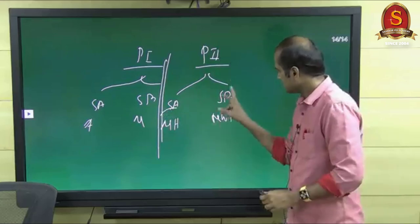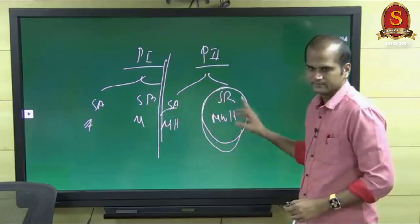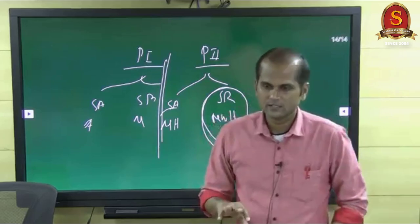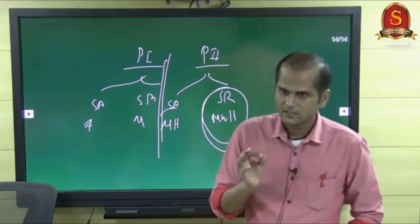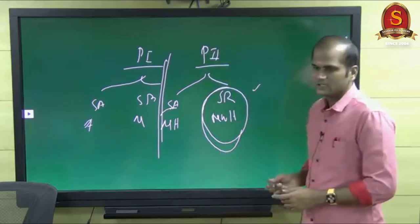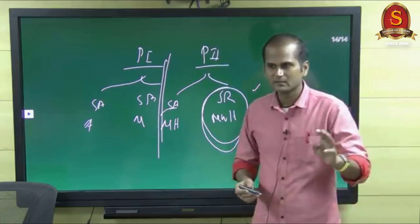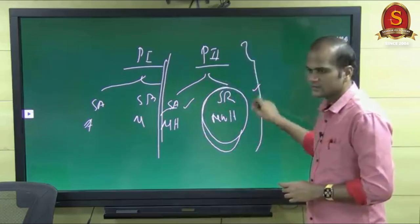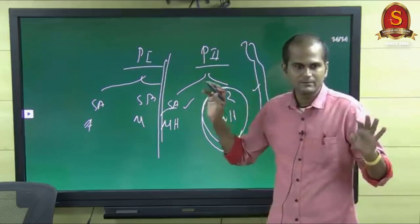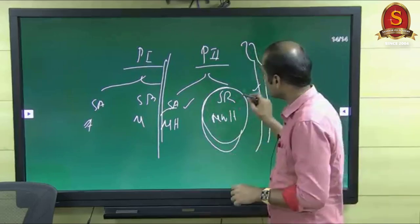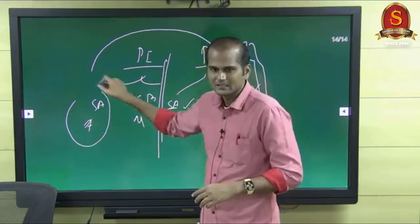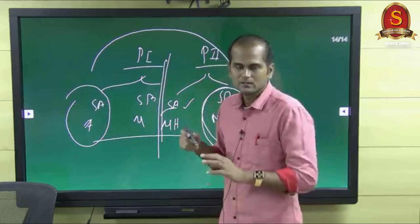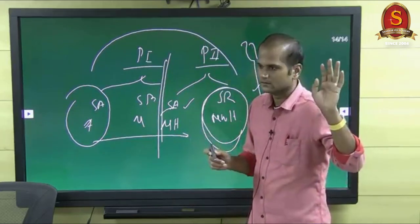We will start with Modern World History first. That is why if you see the syllabus and time schedule, the first 10 days are for World History. One side we will discuss World History in optional; other side, for almost major batches, we will discuss Modern Indian History. Within two to three months, Paper 1 will be completely over. Once World History is done, I will jump to the Ancient part, then Medieval.